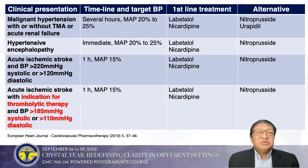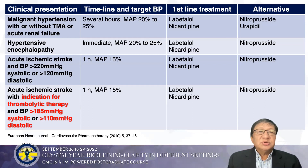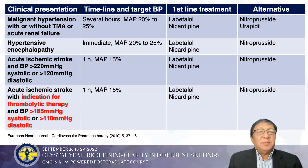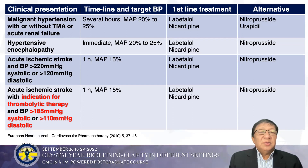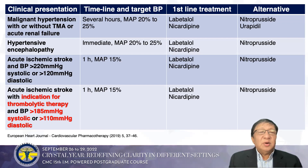Reviewing the timeline and target BP by clinical presentation: malignant hypertension — timeline of several hours, MAP reduction of 20–25%. Hypertensive encephalopathy requires immediate action. Acute ischemic stroke requires action within an hour; thrombolytic therapy can be given if BP is less than 185/110. If BP is greater than 185/110, it must be brought down within an hour. First-line treatment is nicardipine and labetalol, though labetalol is not available in the Philippines, making nicardipine the primary first-line agent.